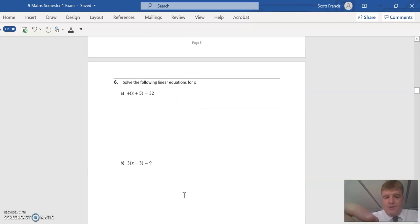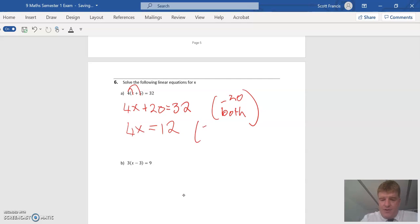We've got to solve this. Let's get rid of the brackets. We're going to multiply 4 by x and 4 by 5. So we have 4x plus 20 equals 32. I want to subtract 20 from both sides. Remember the rule: if we do something to one side, we do it to the other. So 4x plus 20 minus 20 is just 4x. 32 minus 20 is 12. Now we're going to divide both sides by 4, so x equals 12 divided by 4 which equals 3.